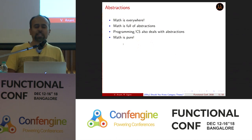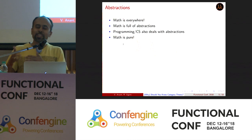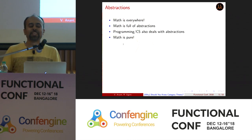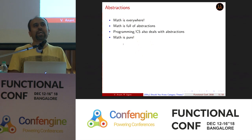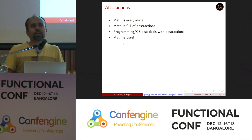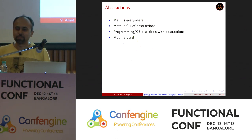So it is natural that whatever branch of mathematics deals with lots of abstractions is going to be a great fit with computer science and programming — and that is exactly what category theory is. Category theory has been called the mathematics of mathematics — a meta kind of mathematics. Because it is so abstract, it can be applied to a very broad extent.